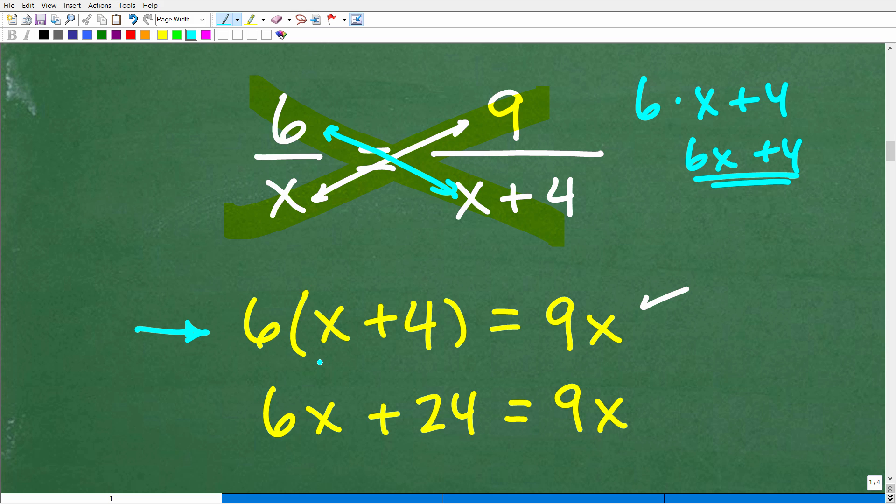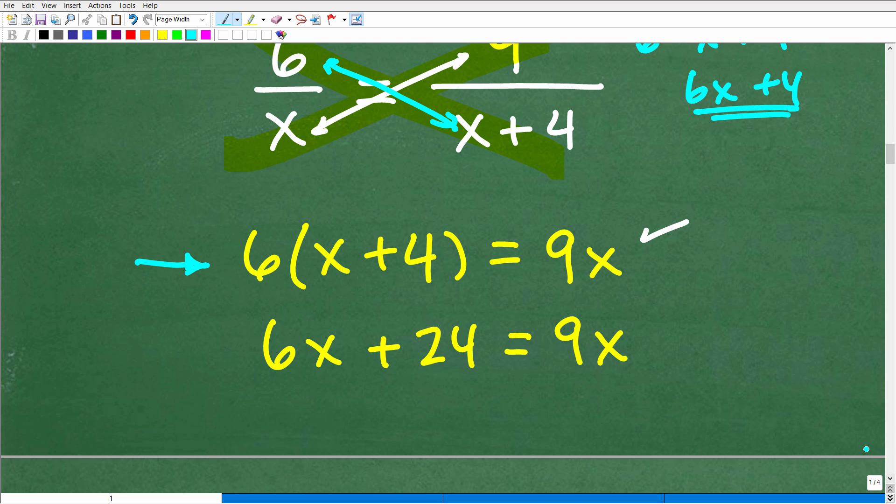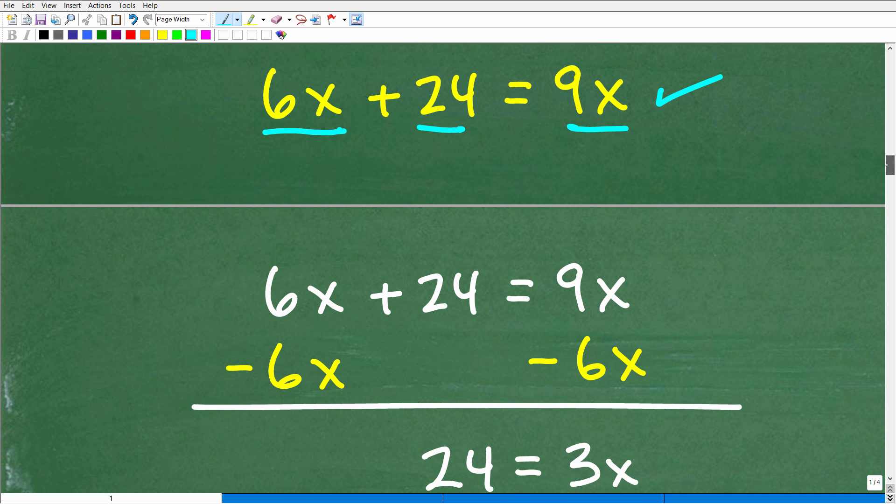So in other words, let's just make sure we know where we're at right now. Right here is the cross product. 9 times x is 9x. 6 times x plus 4 is this expression. Now, we have to continue forward. And here, this is a clear indication that we have to use the distributive property. So 6 times x is 6x. 6 times 4 is 24 is equal to 9x. And now we can simply solve this basic equation right here.